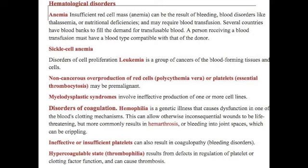More hematological disorders: anemia is an insufficient red blood cell mass that can result from bleeding, blood disorders like thalassemia, or nutritional deficiencies, and may require a blood transfusion. Leukemia is a group of cancers of the blood-forming tissues and cells. Non-cancerous overproduction of red blood cells — polycythemia — may be pre-malignant, as may overproduction of platelets. Myelodysplastic syndromes involve the ineffective production of one or more cell lines. Disorders of coagulation can also occur — hemophilia is an example. Hemophilia is a genetic illness causing dysfunction in one or more of the blood's clotting mechanisms, which can allow otherwise minor wounds to become life-threatening and commonly results in hemarthrosis (bleeding into the joint spaces).